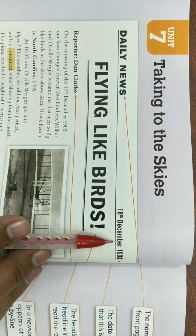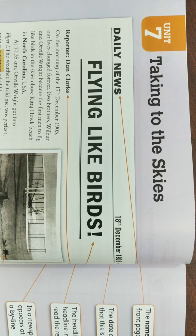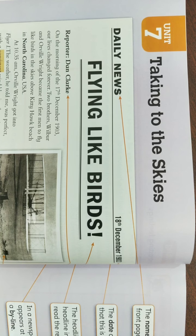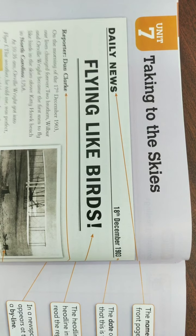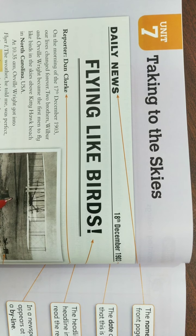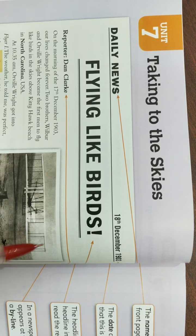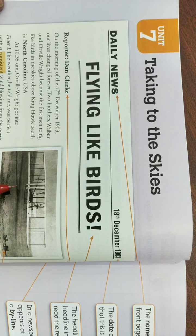A newspaper report is more interesting if it includes illustrations such as photographs. Sometimes the illustration shows the people in the report; sometimes it shows what has happened. A photograph makes the report very interesting. You can see here — there are pictures showing what happened, making the report more vivid.